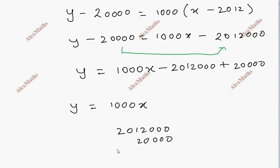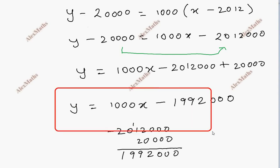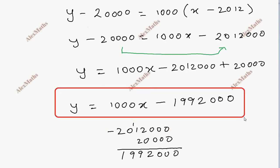Next step: y equals 1000x minus 1,992,000. This is the linear function expressing salary in terms of the year x.